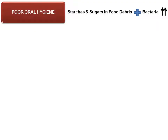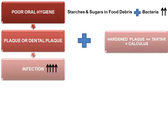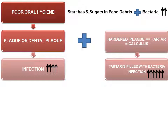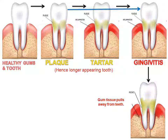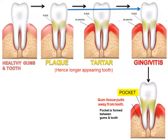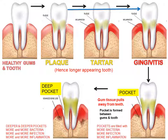When plaque and tartar remain on the tooth for a long period of time — plaque contains bacteria, tartar contains increased bacteria — there is more infection and more inflammation. Because of the ongoing inflammation, gum tissue pulls away from the teeth and small gaps or pockets form between the gums and the tooth. These pockets are filled with harmful bacteria, causing more infection and more inflammation. Pockets become deeper and deeper, filling with more and more bacteria. Gum tissue starts to recede, making the tooth appear longer.